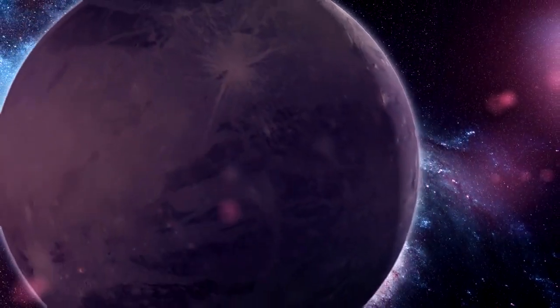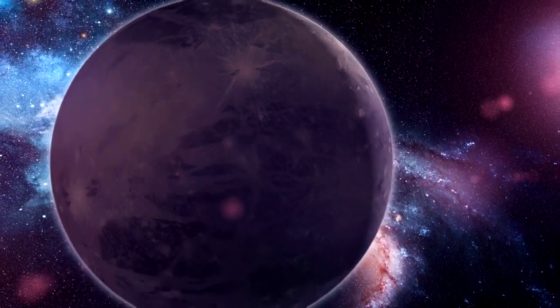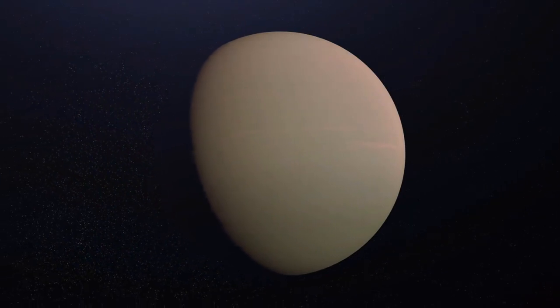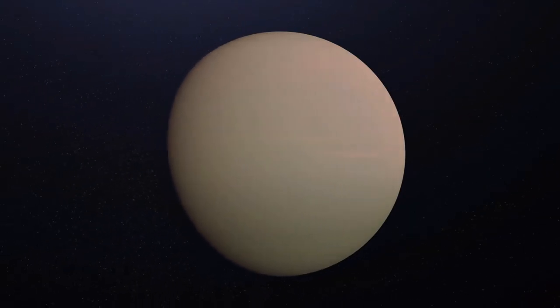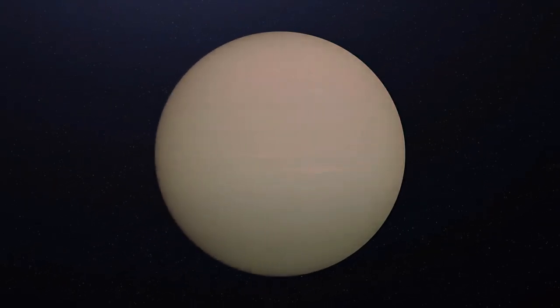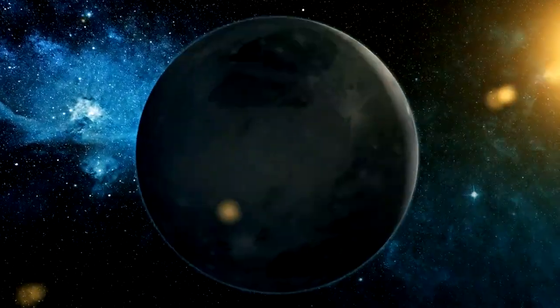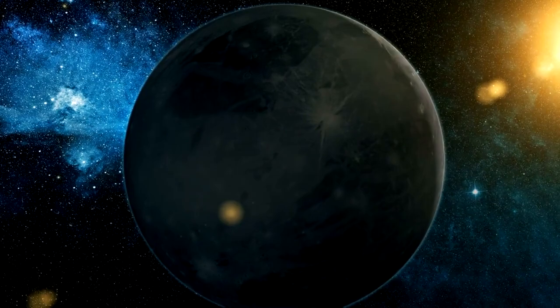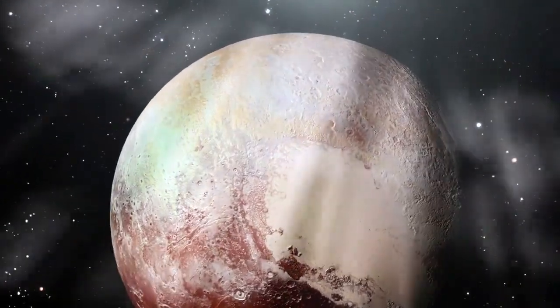Discovered in 1930, Pluto has always intrigued astronomers with its unique orbit. Unlike the nearly circular orbits of other planets, Pluto's path around the sun is highly elliptical and inclined at a 17-degree angle to the ecliptic plane. This unusual trajectory means that for about 20 years in its 248-year orbit, Pluto actually comes closer to the sun than Neptune.